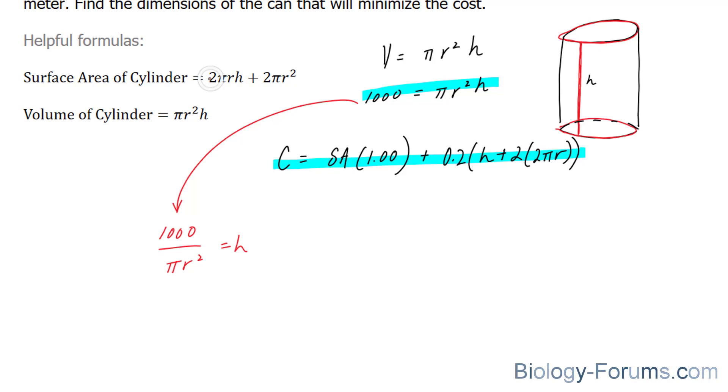And of course, I'm going to replace SA with the following. So we have the cost is equal to 2 pi r times 1000 over pi r squared plus 2 pi r squared, and we're going to multiply that by 1. Plus 0.2 times 1000 over pi r squared plus 2 times 2 pi r.